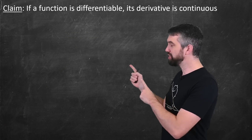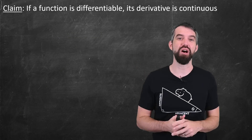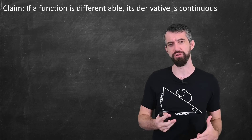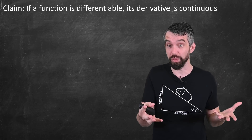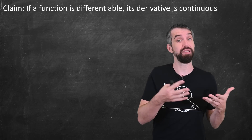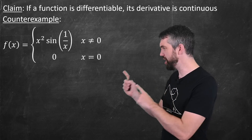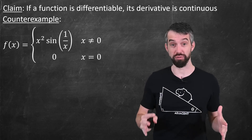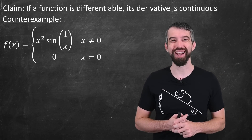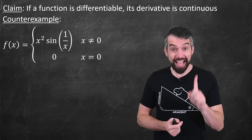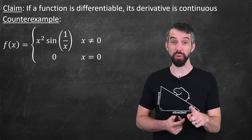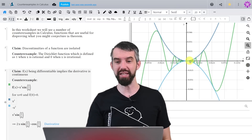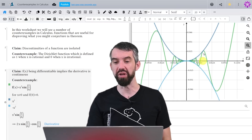For my next counterexample, I want to consider a claim that hopefully most calculus students know is not true, but may take some investigation to see why. The claim is that if a function is differentiable, then its derivative is continuous. Consider this function: x squared sine of 1 over x when x is not 0, with a problem spot inside the sine when x equals 0, where we impose the function value to be 0.